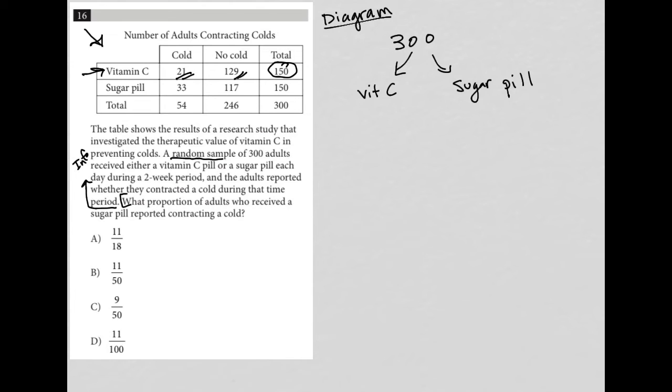And out of the 150 people who took a sugar pill, 33 of them caught a cold, and 117 of them did not. So the question says, what proportion? So on the SAT, proportion equals fraction.